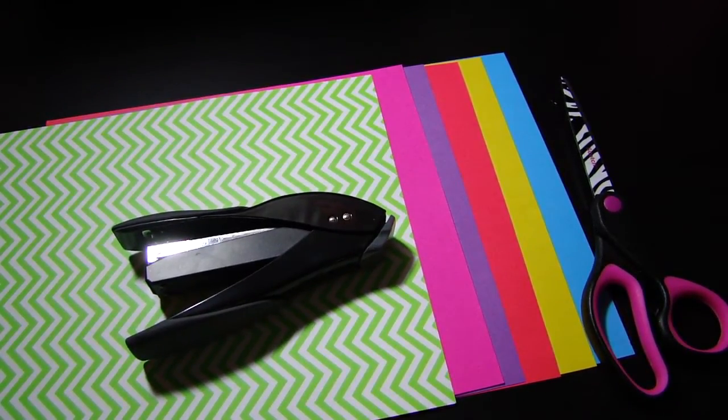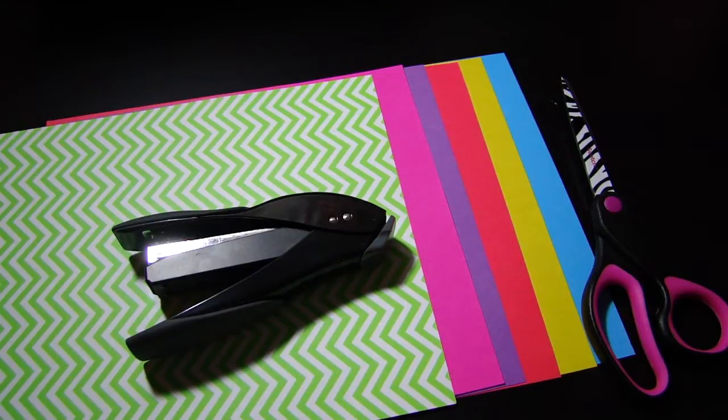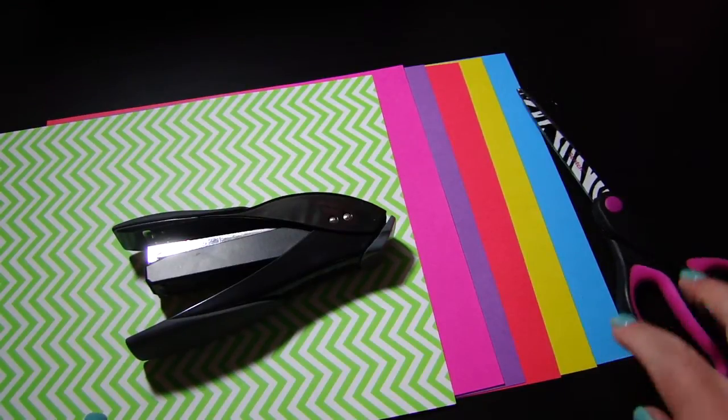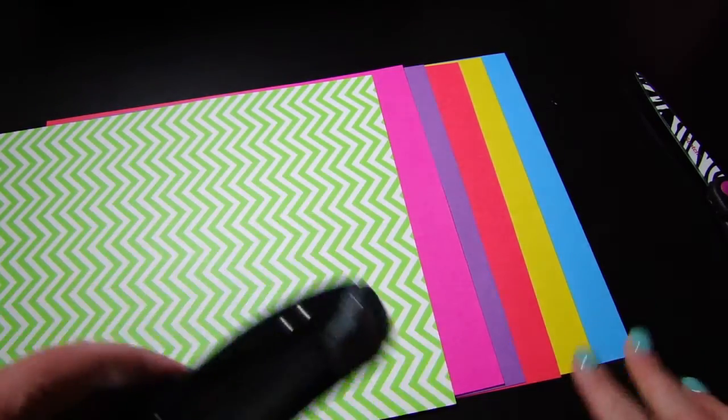Okay, welcome to Mrs. Krupp's tutorial for a tabbed foldable, the one that we're going to be doing for our periodic table. So what you are going to need are six pieces of colored paper, which you can see right here.